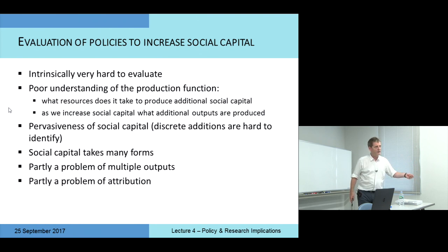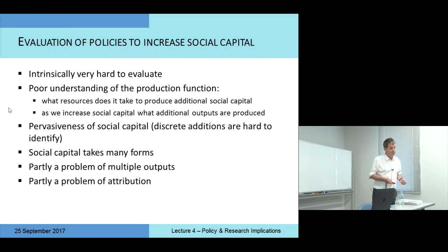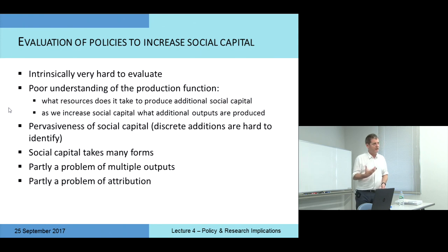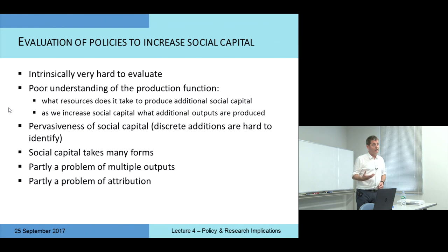A lot of the effort has gone into measuring social capital, measuring health and saying they're associated. But how do we produce social capital? And then, as we increase social capital, what additional outputs are produced? What are the changes in health that are produced? Without understanding the production function, it becomes so difficult to evaluate policies to increase social capital.